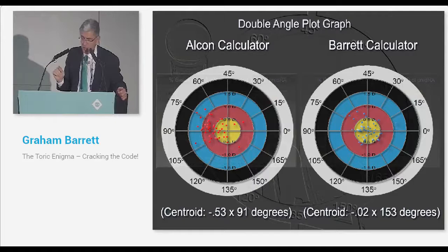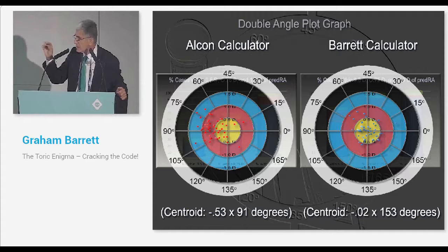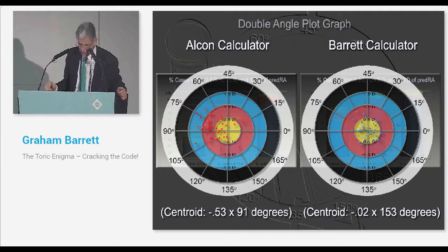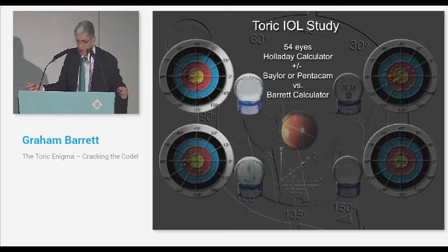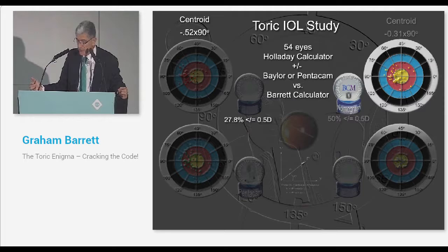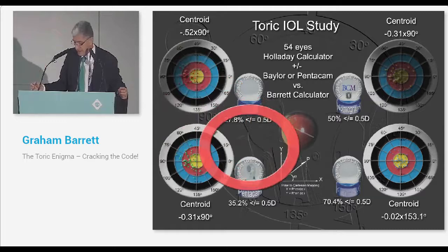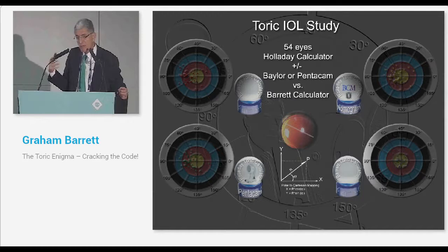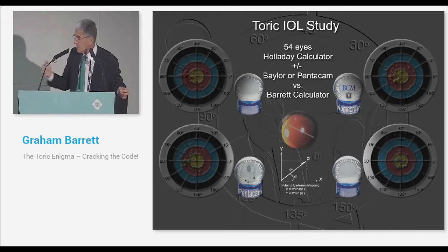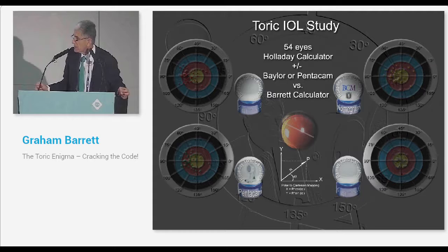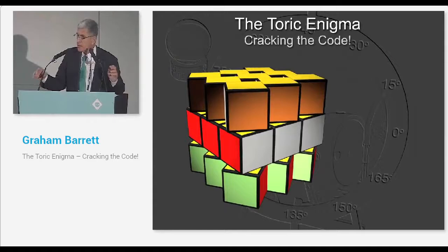If we look at that double plot graph and you compare the Alcon to my own calculator, can you see the centroid? It's the center of that scatter plot on the double plot graph, close to zero as opposed to 0.5 diopters. What's different here is we looked at the Holladay calculator with the Baylor method, which had improved the percentage within the half-diopter to 50%. We also looked at the Holladay with Pentacam measurements of the posterior radius. Not that great. Still 35% as opposed to 70.4% for my own calculator. It's a bit of a surprise, but if you measure the posterior radius, at least on the Pentacam, you're not going to get as good a result as with my calculator.